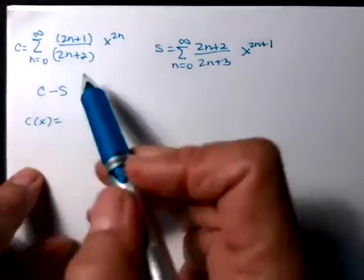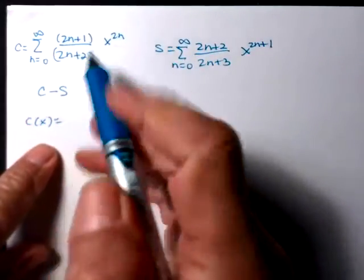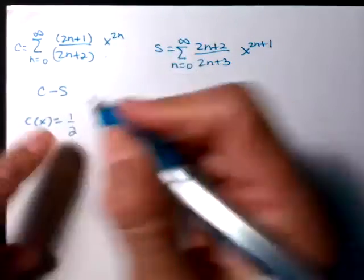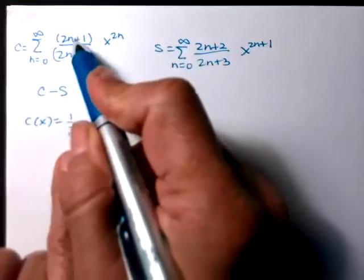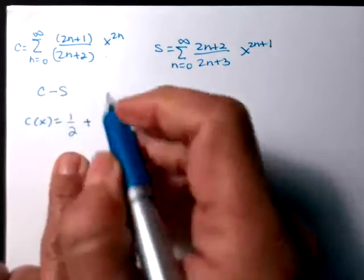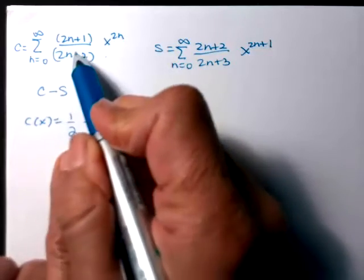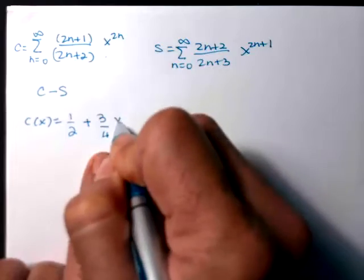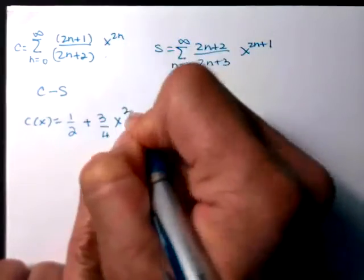So if N is 0, what are we going to get? We'll get 1 half is my coefficient, x to the 0 is 1, so just 1 half. N is 1, so I'll get a 3 for the top, so plus, I don't have an alternating part, so 3. N is 1, so that's 2 plus 2 fourths. N is 1, x squared.